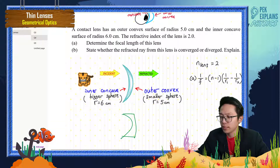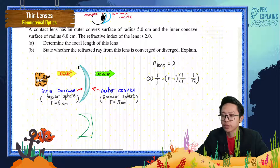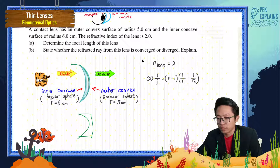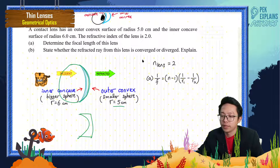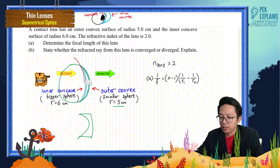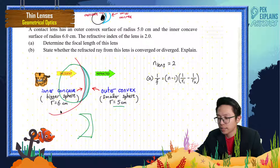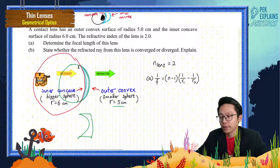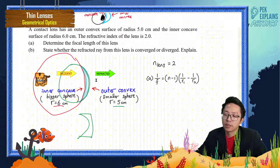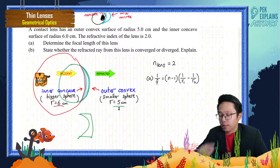So the outer convex surface is the smaller sphere — more curved, smaller radius of 5 cm. The inner concave surface has a bigger radius, meaning a bigger sphere and less curvature. The convex surface with the smaller sphere is more curved, and the concave surface with the bigger radius is less curved.